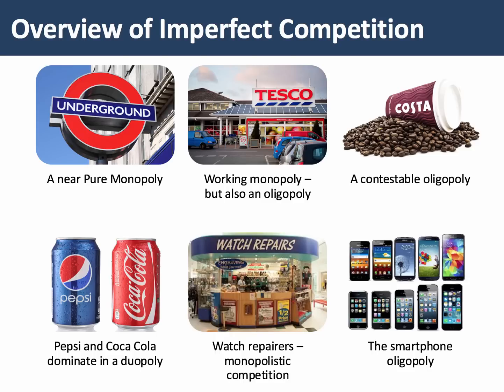London Underground, for example, is an example of a near-pure monopoly, although of course there's competition in different forms of transport. The supermarkets in the UK are essentially a working monopoly — Tesco is the dominant firm — but also an oligopoly, with five firms dominating the market and the rise of the deep discounters. Coffee shops such as Costa are essentially a contestable oligopoly; Costa is by far the biggest coffee retailer in the UK, but there are many competing brands. Pepsi and Coca-Cola are essentially dominant firms in a duopolistic market in certain countries.